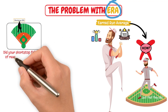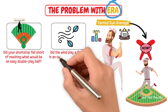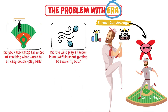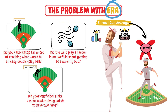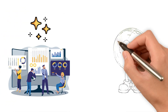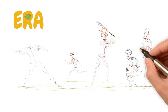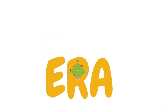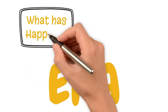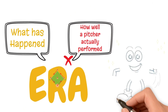Did your shortstop fall short of reaching what would have been an easy double play ball? Did the wind play a factor in an outfield not getting to a sure flyout? Or did your outfielder make a spectacular diving catch to save two runs? ERA does not know. And that has been the spark for analysts everywhere attempting to find new ways to evaluate how good a pitcher actually is, because ERA relies heavily on the environment a pitcher throws in and the defensive abilities behind him.